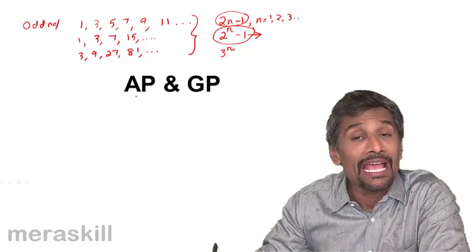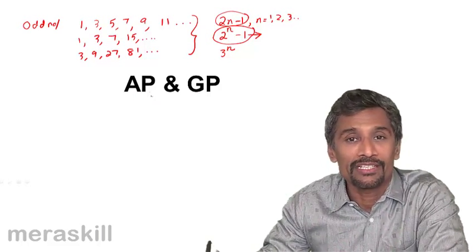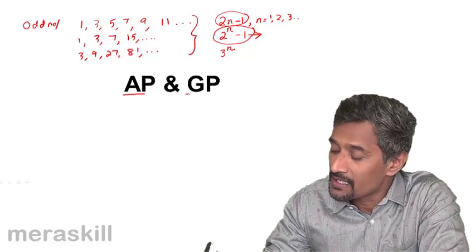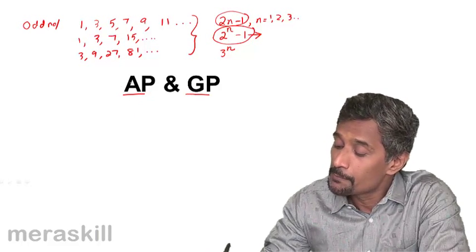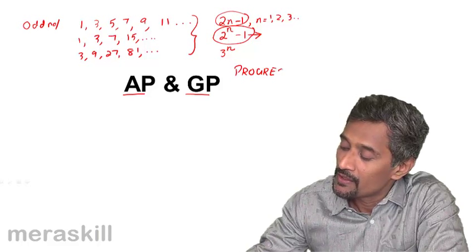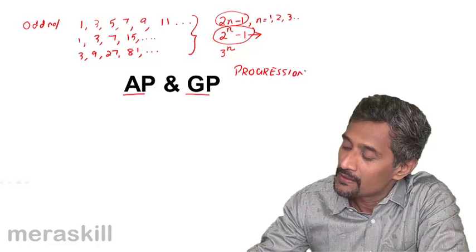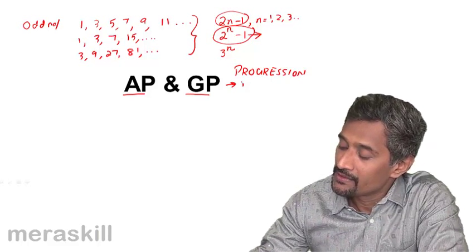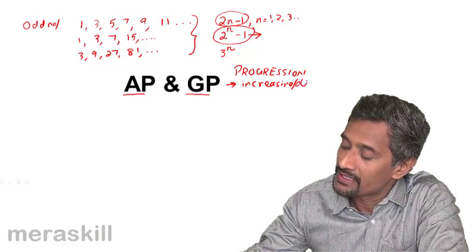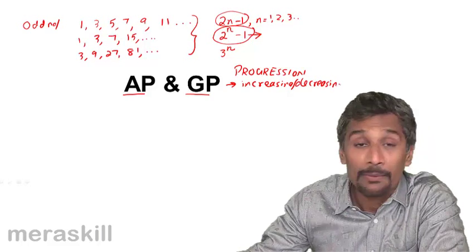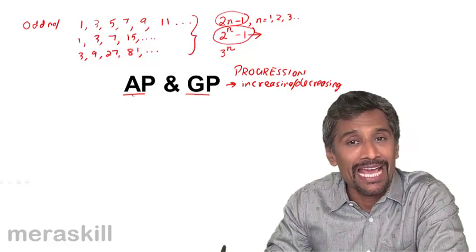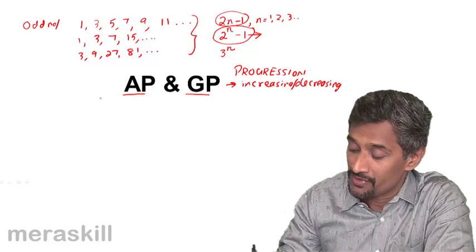Now every arithmetic progression, every geometric progression is also a kind of a sequence, but they are very specific kinds of sequences. The word progression itself, when you say progression, it means it is either increasing in some form step by step or decreasing in some form step by step. Then we call it as a progression. But there is a difference between an arithmetic progression and a geometric progression.